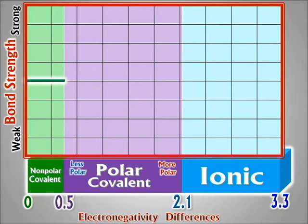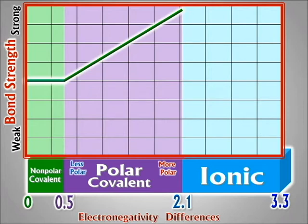But as soon as you pass 0.5, the bond strength begins to increase. It pulls the atoms closer together, making it harder to break — it takes more energy. Kind of like what we just saw: the 0.5 difference was around 300 kilojoules per mole, and the 1.8 was almost up to 600. So a very polar bond — like when the difference is around 2.0 — would be really difficult to break, requiring a huge amount of energy.